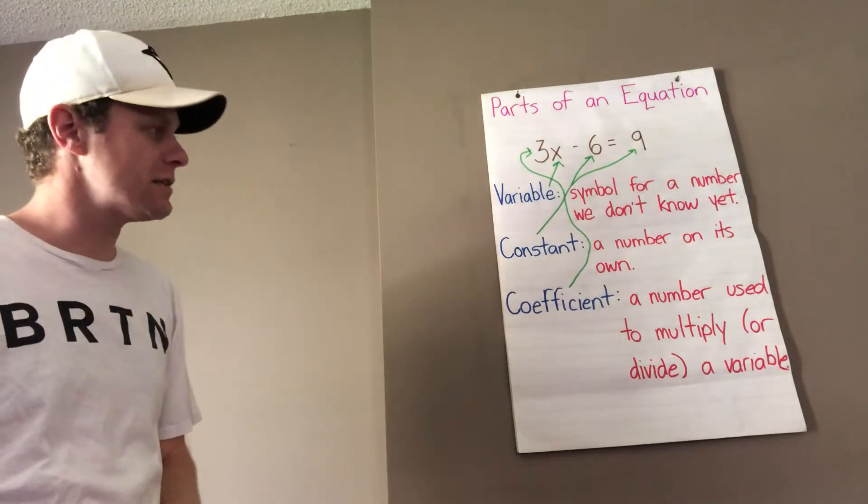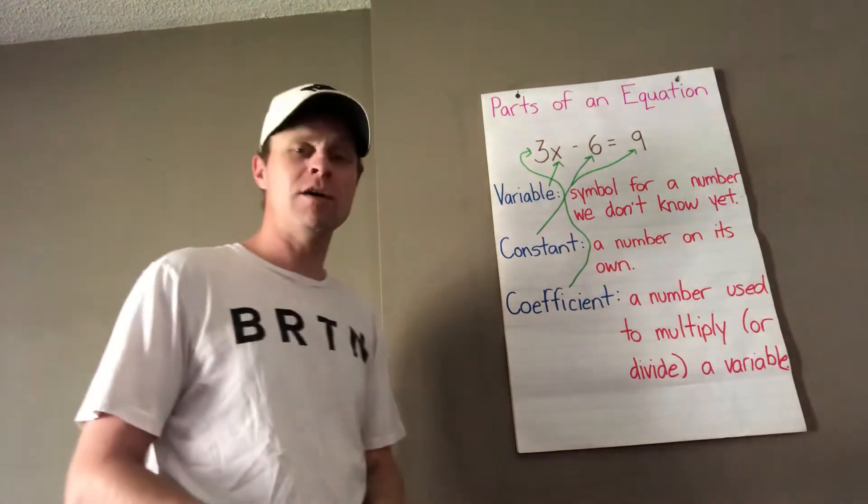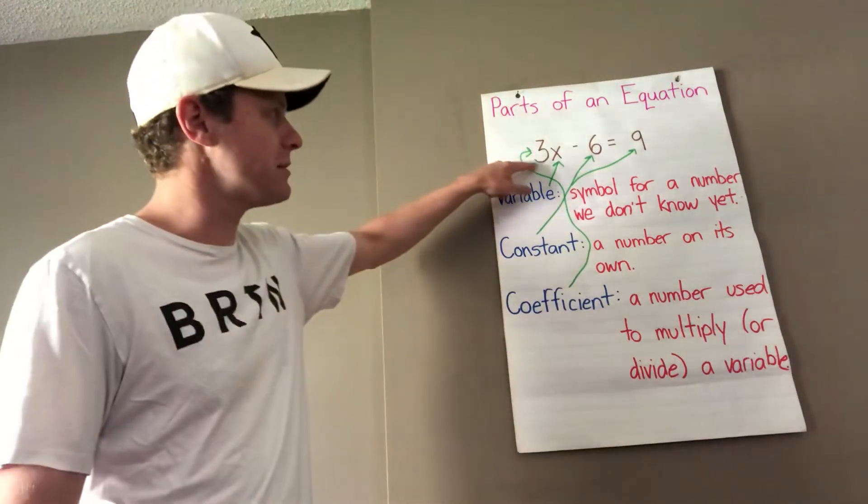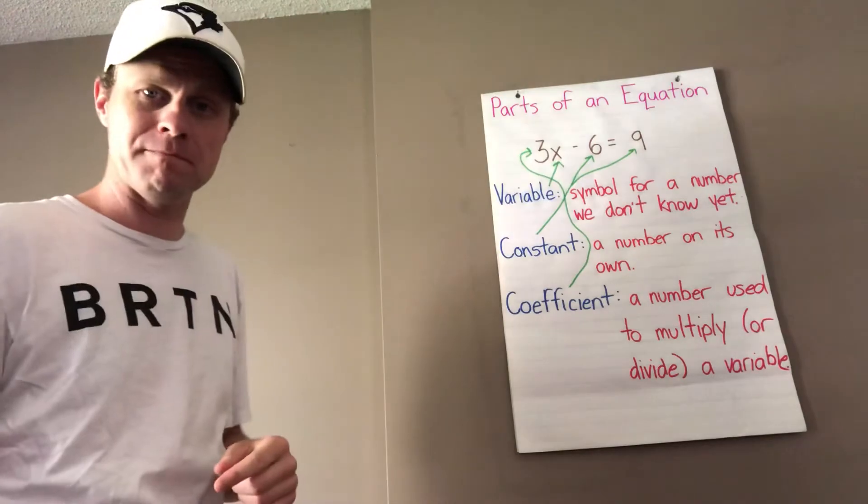And the coefficient is a number used to multiply or divide a variable. So the coefficient is always right in front of the variable.